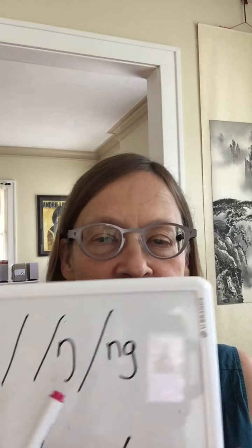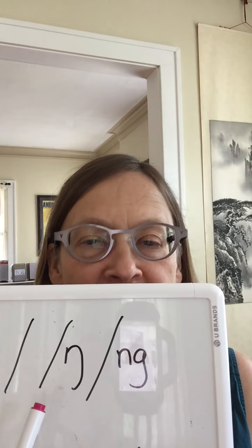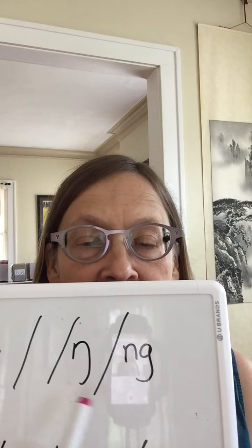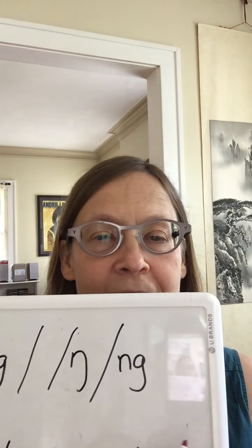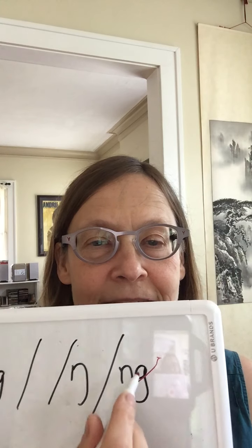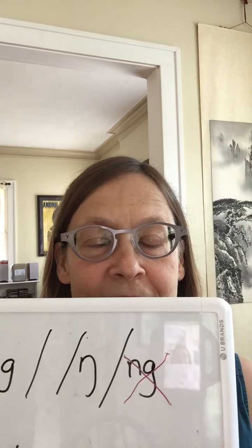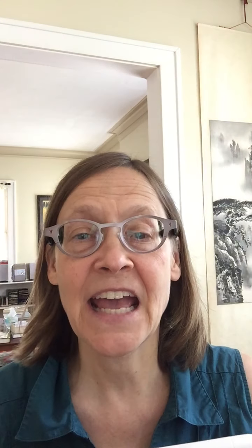We never have the NG sound at the beginning of a word in English, so it's going to be hard for you to say it. This is the sound like at the end of the word 'thing' or 'sing.' We write it N-G, but it is not two sounds — that's just spelling in English. It's one sound. You don't say 'thing-g,' you say 'thing' — that's one sound.